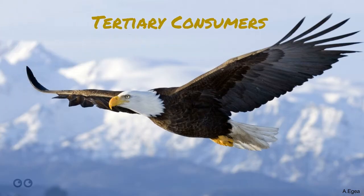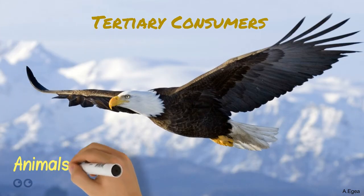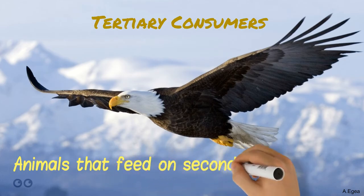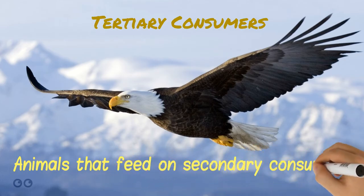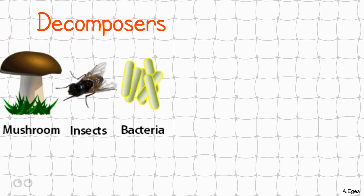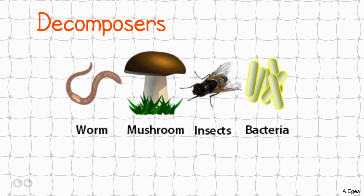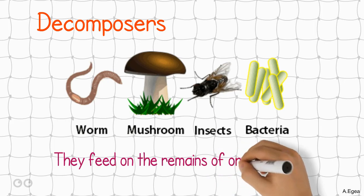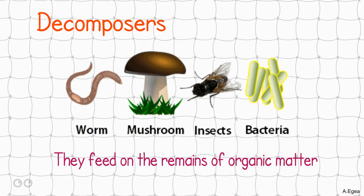Tertiary consumers are animals that feed on secondary consumers. Decomposers feed on the remains of organic matter.